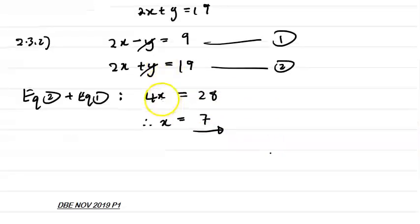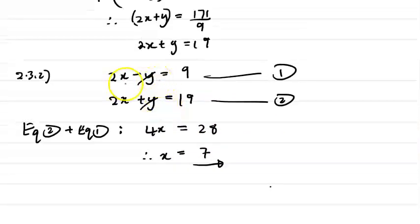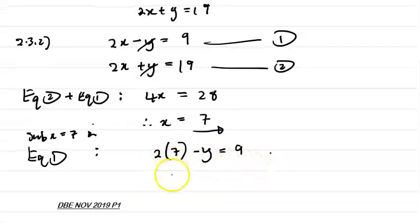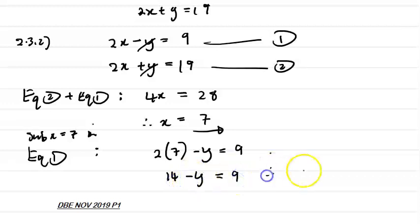Now, in order for us to solve for y, we can use any one of these equations that we have up here. So we can substitute. Let's substitute an equation. Let's put in equation 1. So we can now substitute x equals to 7 in equation 1. So we'll get 2 times 7 minus y equals to 9. What's that? 14 minus y equals to 9.